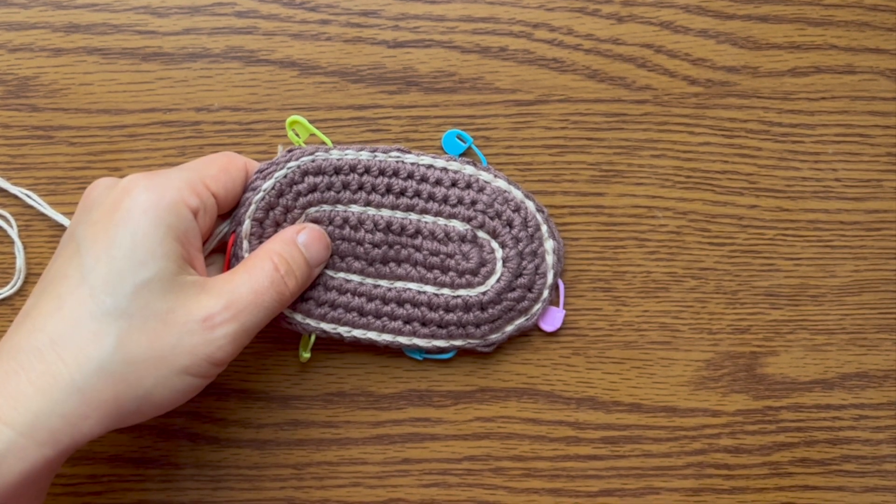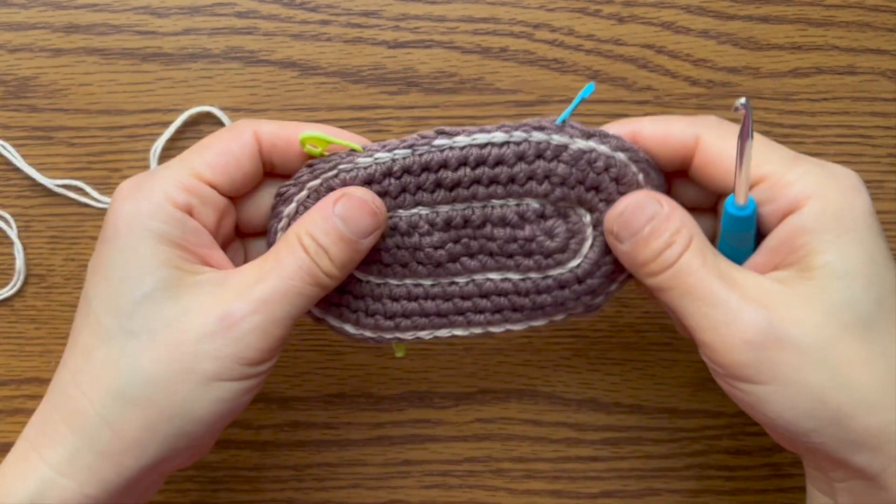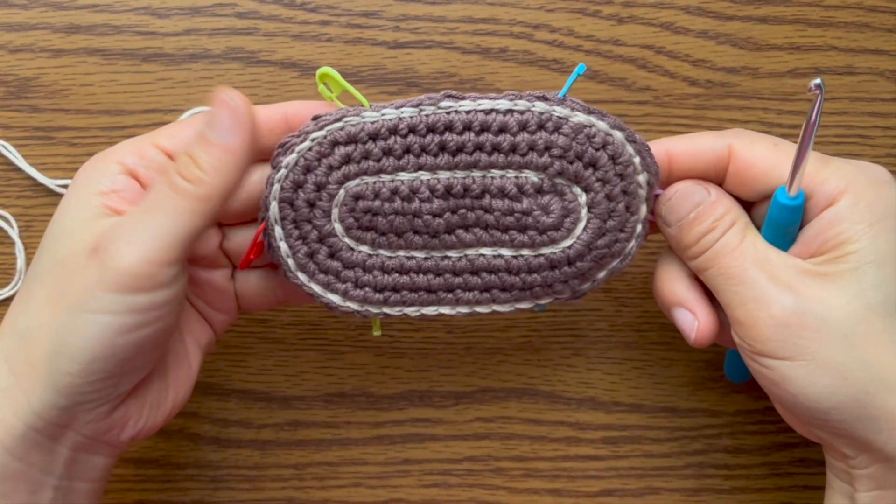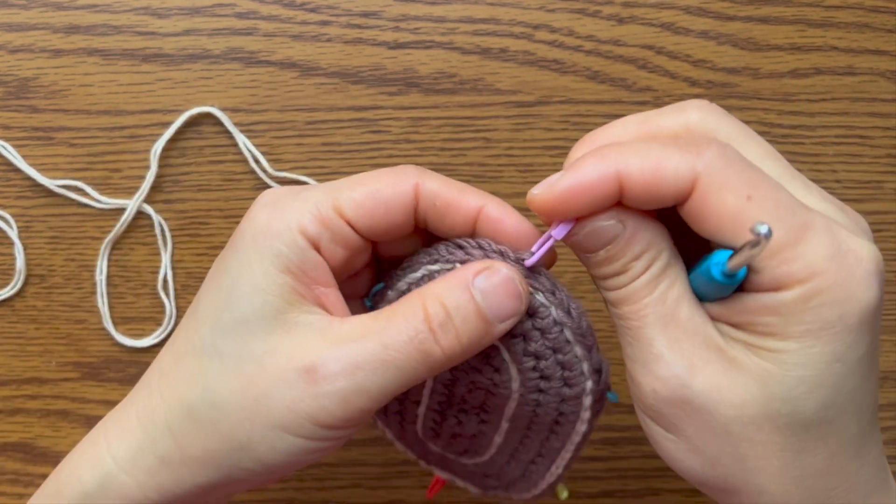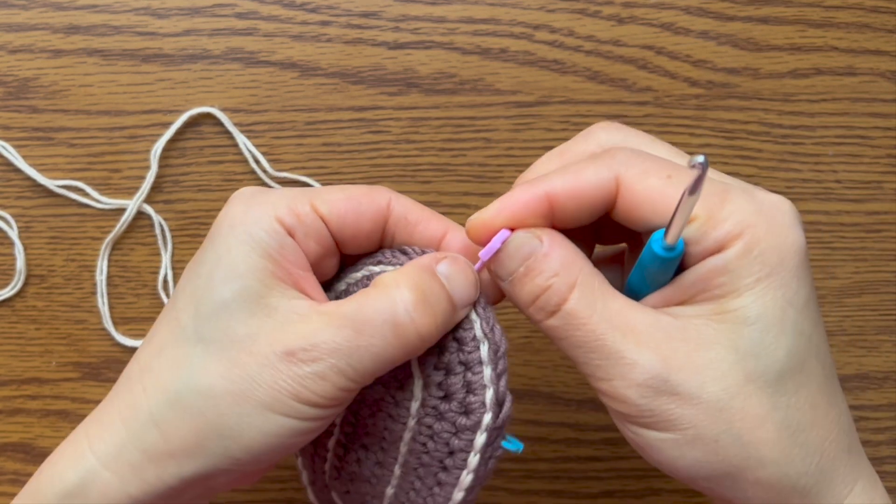This is from the last video. A sole for 6 to 12 month baby shoe. 10 stitches between the markers on two sides. 15 stitches between the markers on the two ends. There are markers in the middle stitches of the two ends.